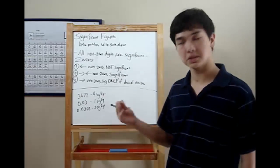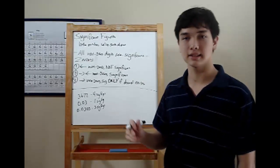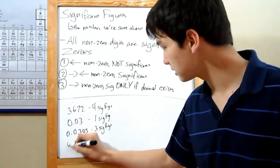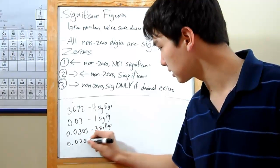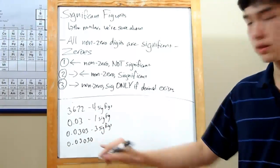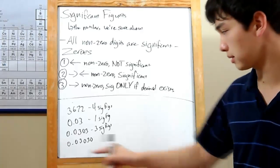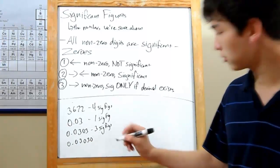Last, zeros to the right of non-zero digits are significant only if there's a decimal point in the number. For instance, 0.03030. That zero that we tagged on is significant because we've got a decimal point over here. So, four significant figures.